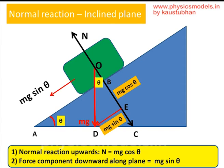Now we just redraw those arrows. mg sin theta is drawn as if it is coming from the center of gravity of the block — you can see the red arrow. We draw the normal reaction N, which is the equal and opposite force by the blue plane on the green block. So the blue plane pushes back on the green block with the same equal and opposite force to mg cos theta.